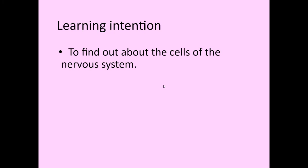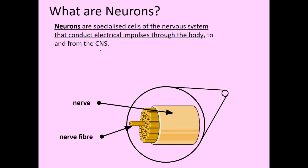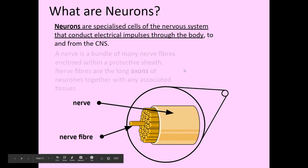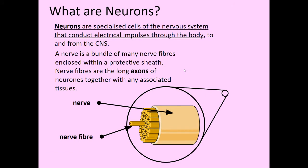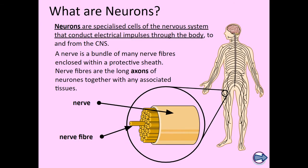We think about the cells of the nervous system and the overall structure. Neurons are just another word for nerves. They are special cells of the nervous system that conduct electrical impulses — electrical signals throughout the body — and they go to and from the central nervous system, so to and from the brain and spinal cord. A nerve is just a bundle of lots of different nerve fibers enclosed within a protective sheath. Nerve fibers are the long axons of neurons together with any associated tissues. Inside, there are actually lots of little bundles of nerve fibers.